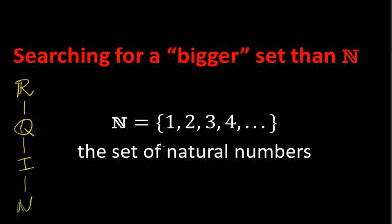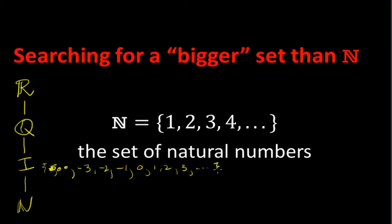The natural numbers are just the counting numbers. The integers are all the positive and negative ones, including zero: ...minus 3, minus 2, minus 1, 0, 1, 2, 3... — the negative and positive whole numbers. Q is the set of all fractions. And R is the set of real numbers — all decimal numbers, irrational and rational.